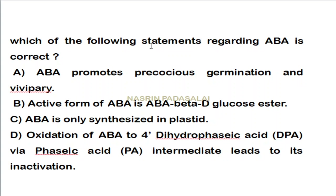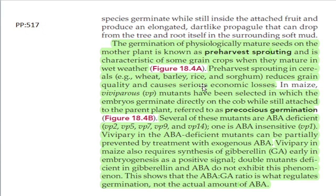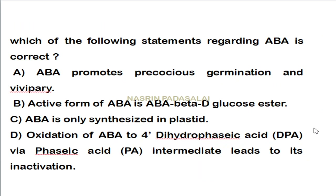Which statement regarding ABA is correct? First statement — ABA promotes precocious germination in viviparous mutants — is wrong. Viviparous mutants are ABA-deficient, meaning ABA actually prevents precocious germination, while GA (gibberellin) promotes it. Second statement — active form of ABA is ABA beta-D-glucose ester — is also wrong. Third — ABA is synthesized only in plastids — is wrong because after xanthoxin is produced, it is transported to the cytosol where it is converted into abscisic acid; both chloroplast and cytosol are involved.